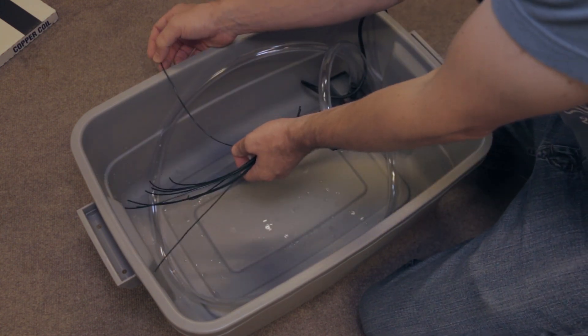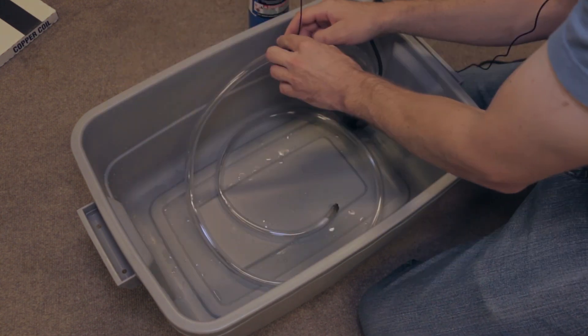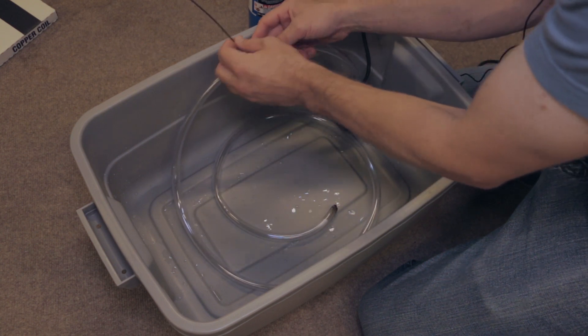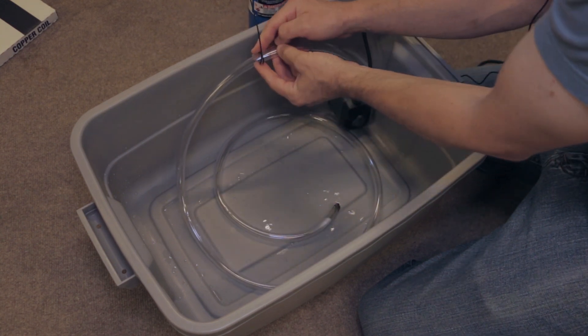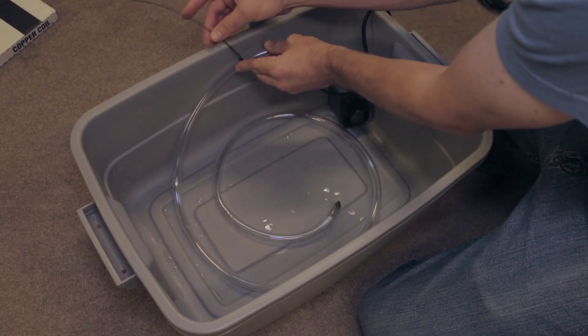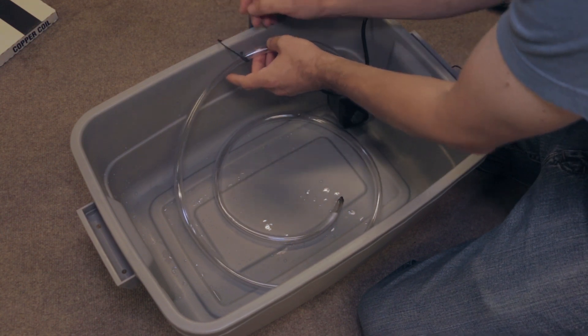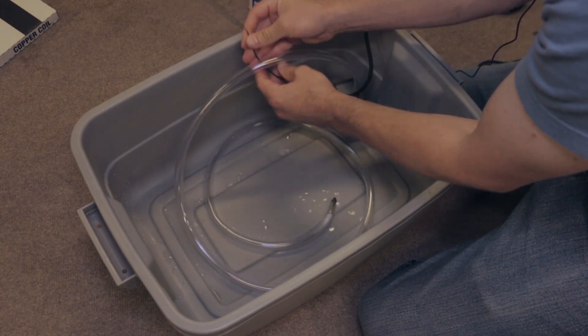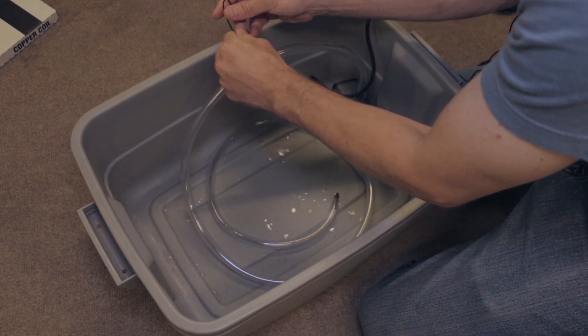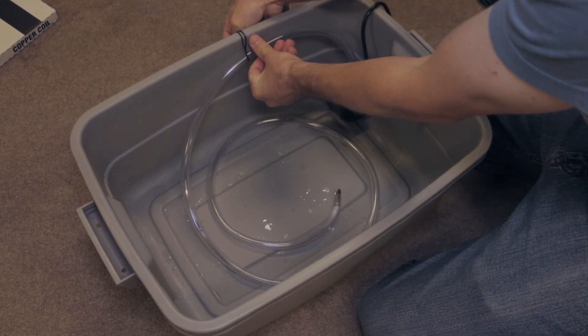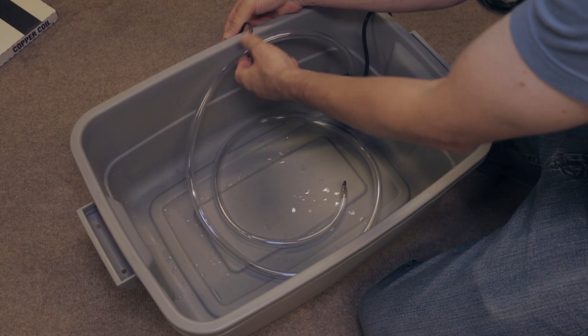These are thin enough to where it's not going to interfere with the lid. You can do this a number of different ways - you can wrap the wire around the tubing like one or two wraps and then bend it over the side, or you could kind of do it like a hammock and then bend both leads over the side as well. It doesn't really matter.